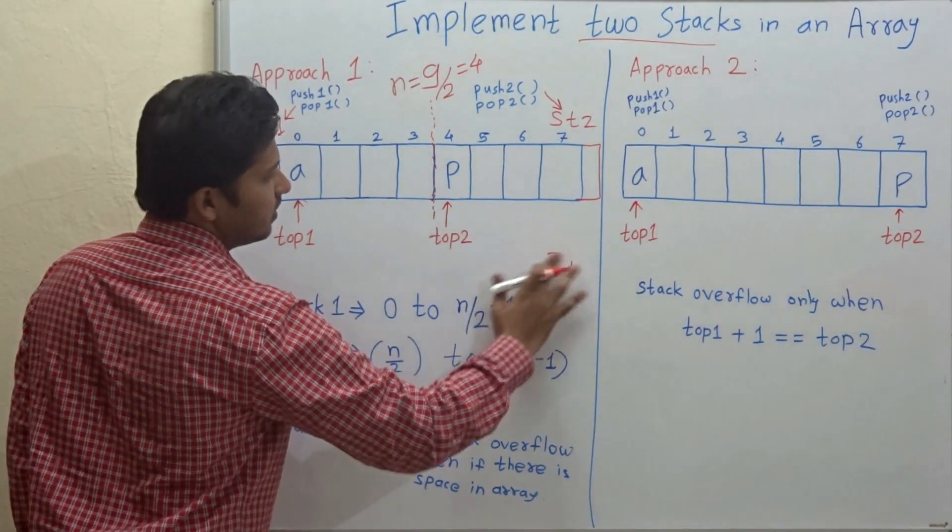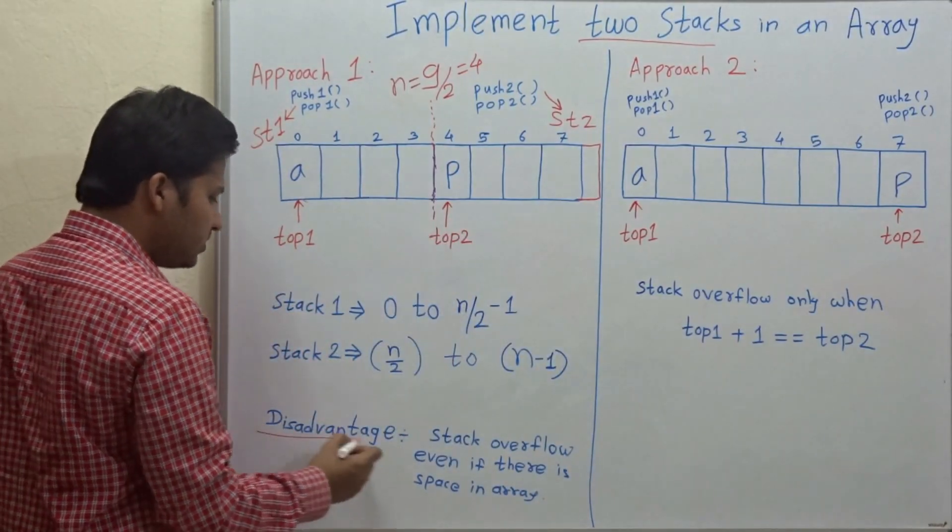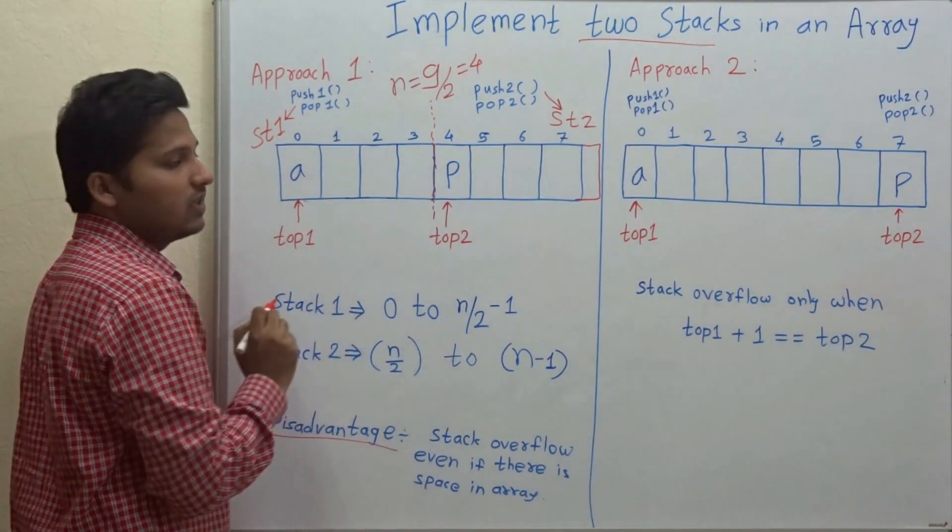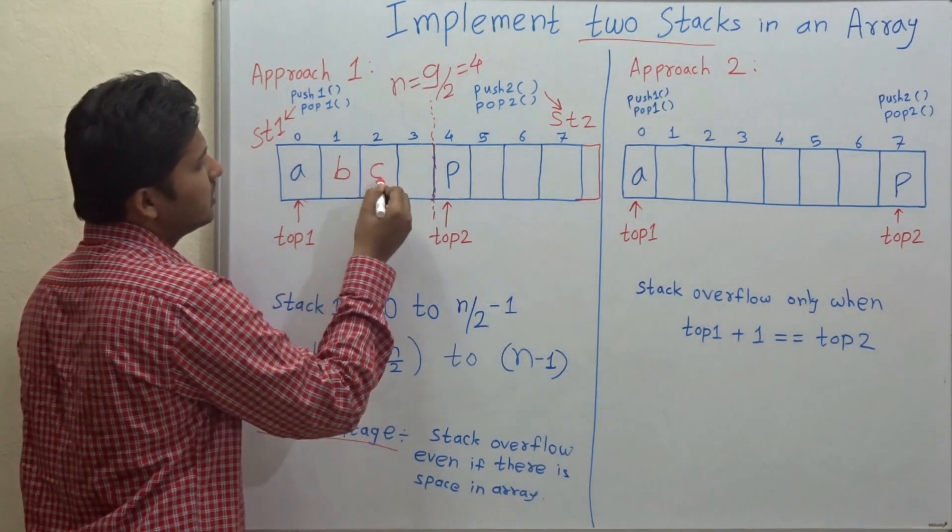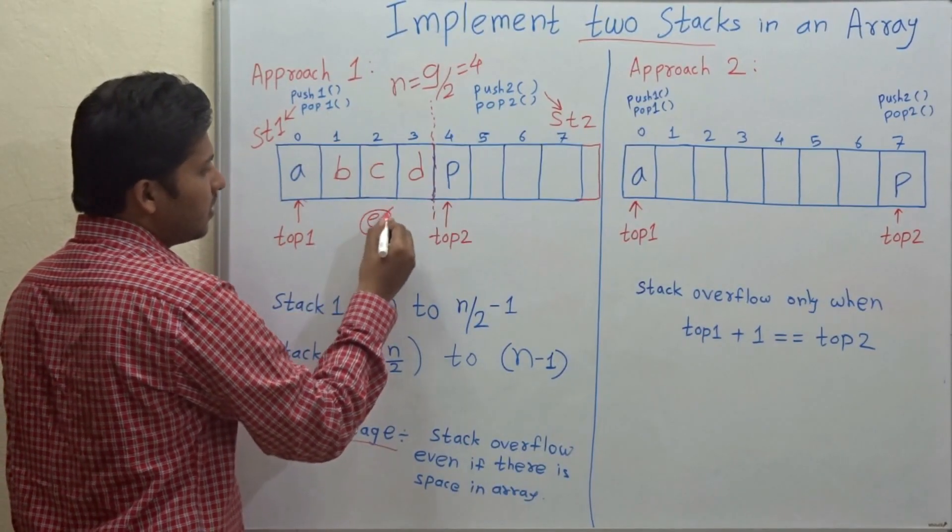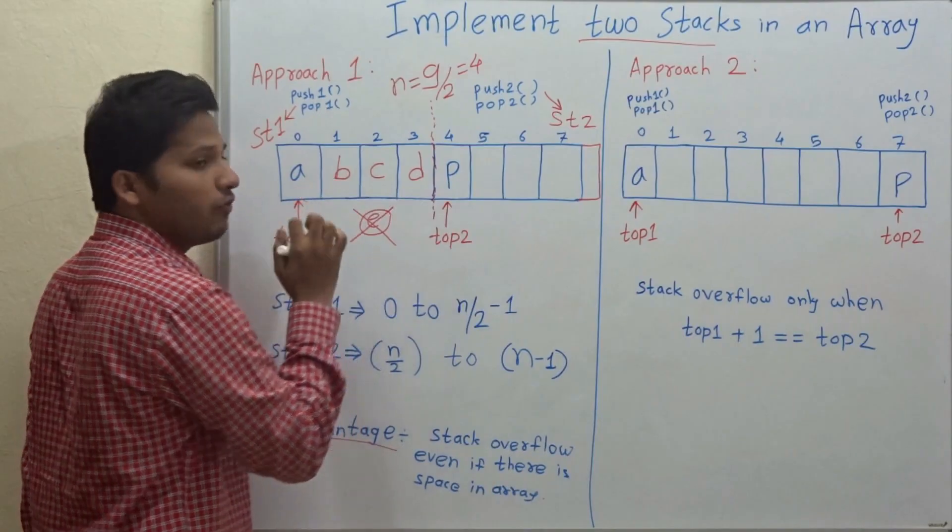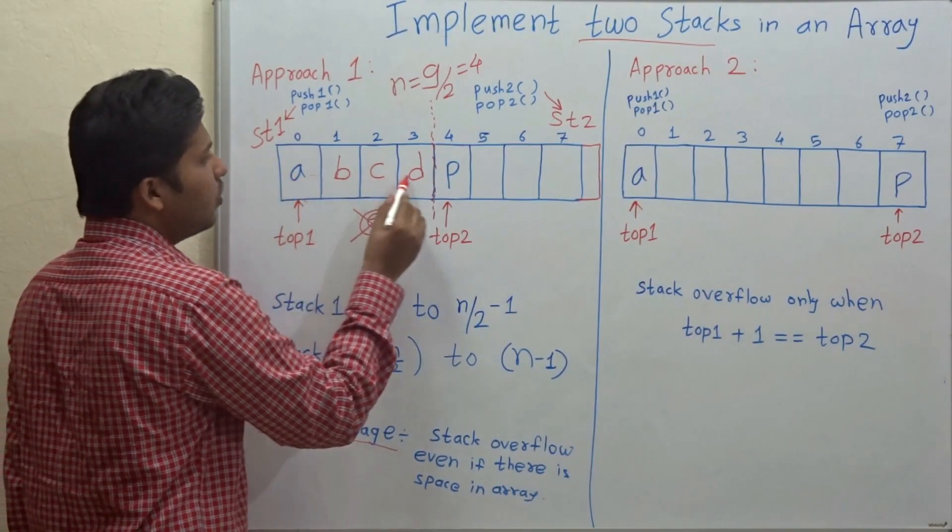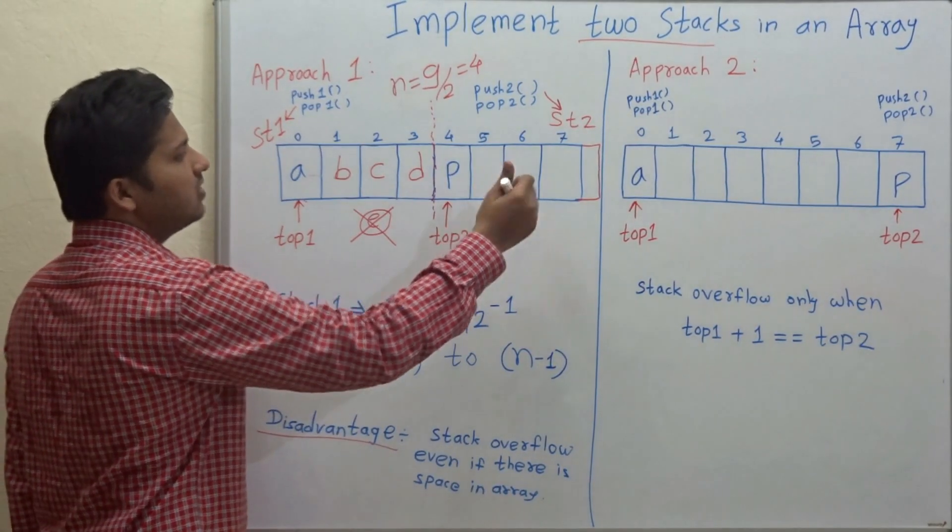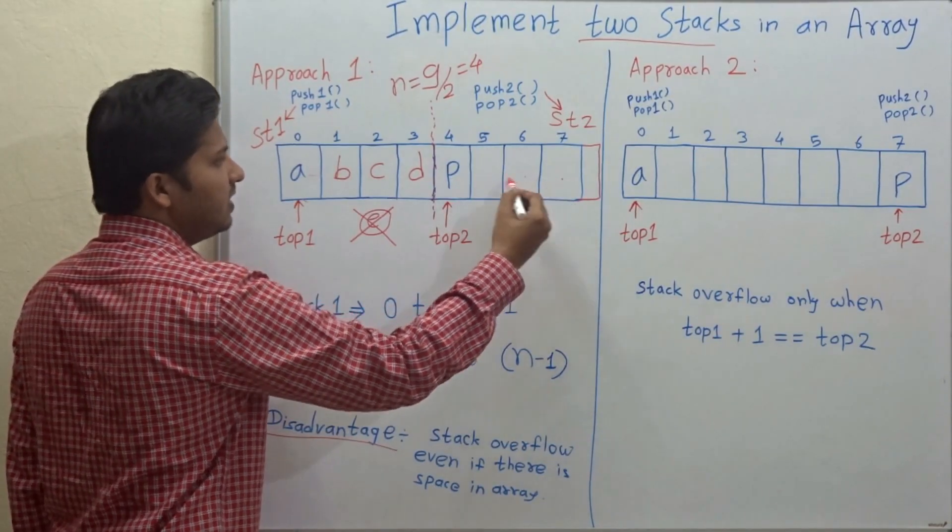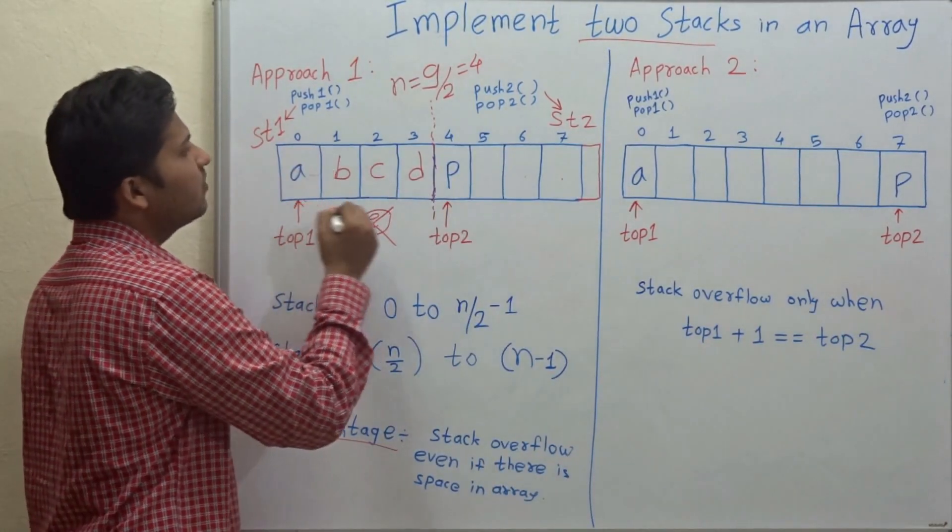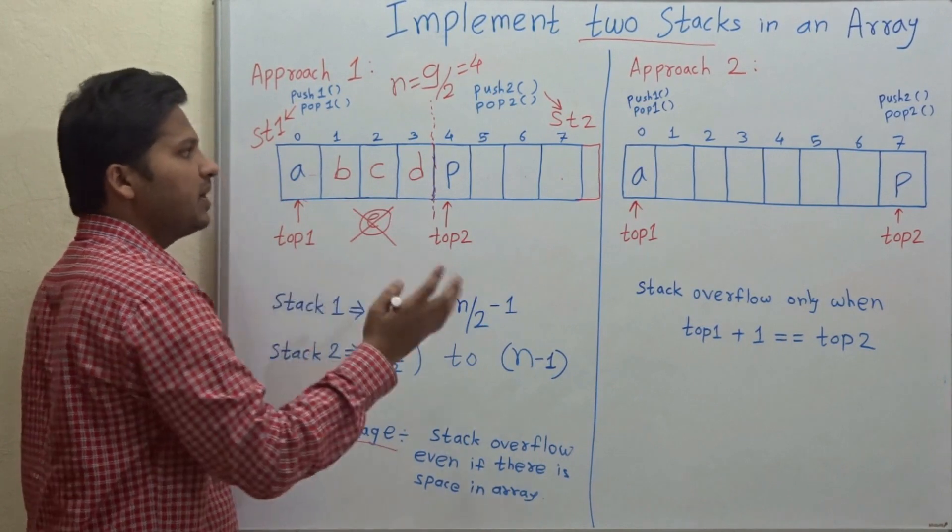So, let's see what is the disadvantage of this approach. Now, suppose if you start pushing into stack 1, so let's push A, then push B, C, D, and when you call push 1 now for pushing E, it cannot be pushed because this stack is full. So, this stack will overflow. But, if you observe carefully, there are still cells empty. So, there is a place in this array, but not in this stack. Because the stack 1 is over, but there is space in this array.